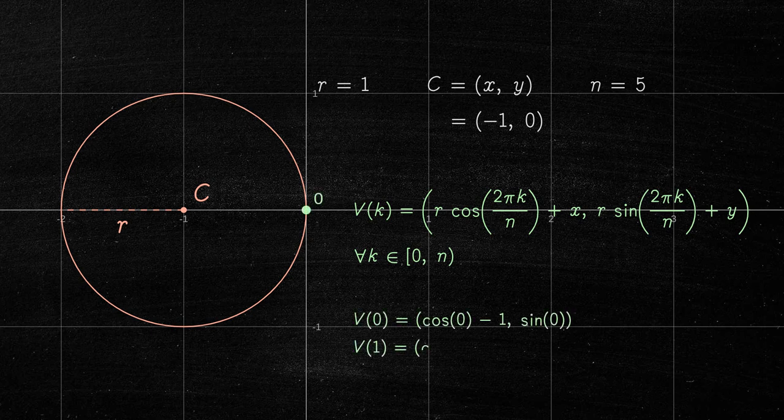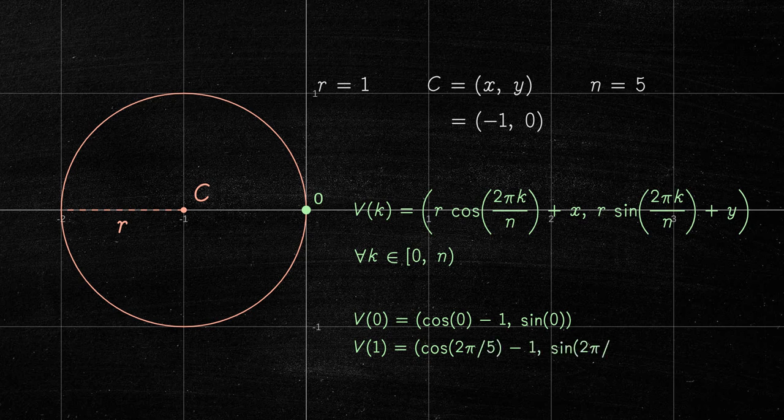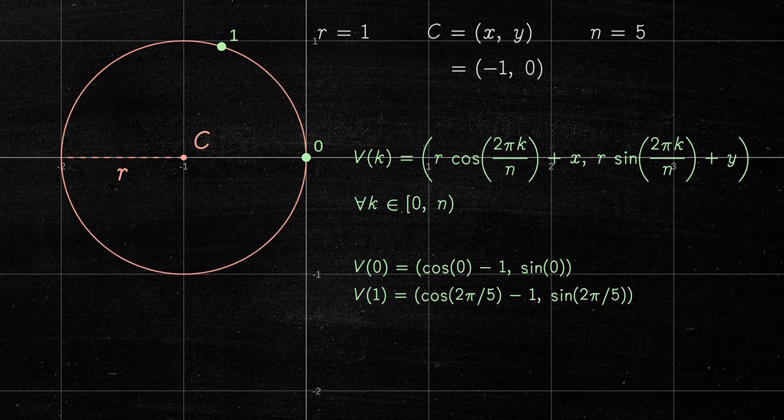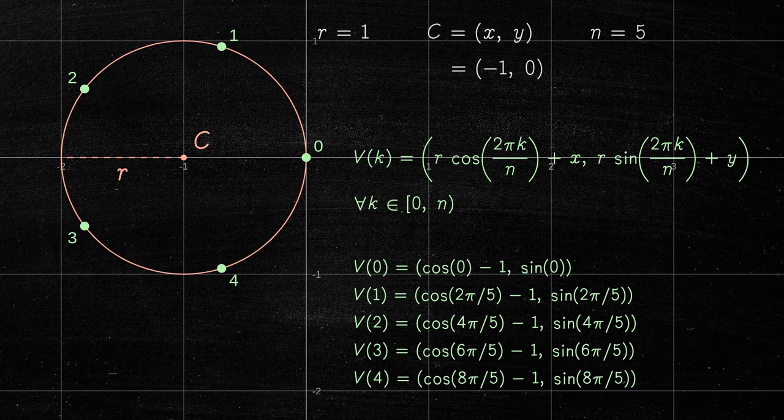The second vertex would be at k equals 1, and so on. Once we have all five vertices, we can use them to draw the pentagon.